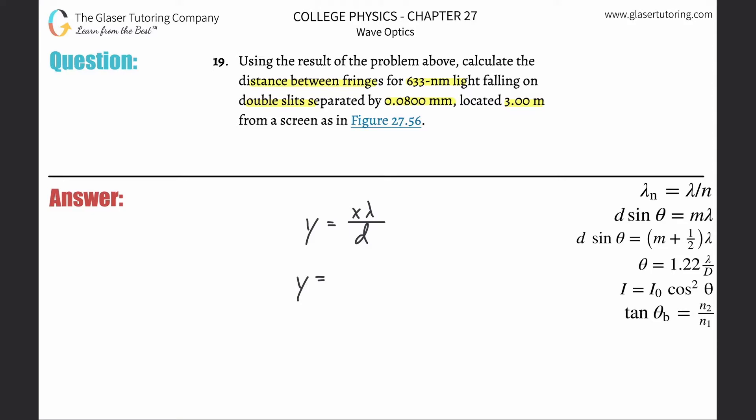The x here is going to be 3, the lambda is 633 nanometers. Convert that into meters, so that's going to be 10 to the minus 9, and then divide that all by the distance between the slits, which was 0.08 millimeters. So multiply that by 10 to the minus 3 to get that into meters.